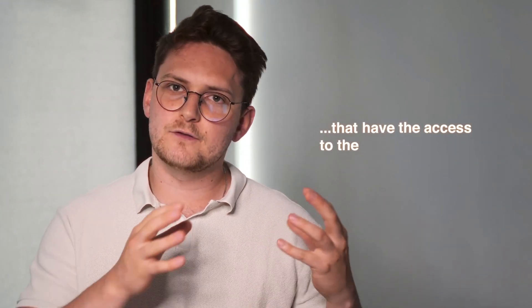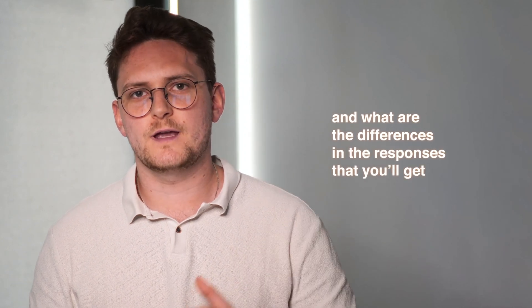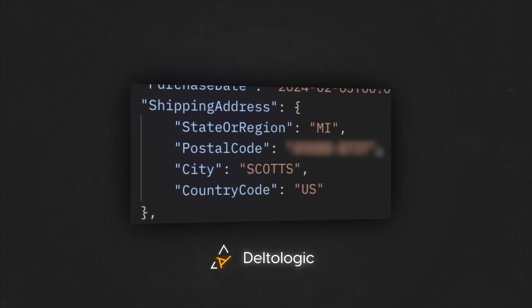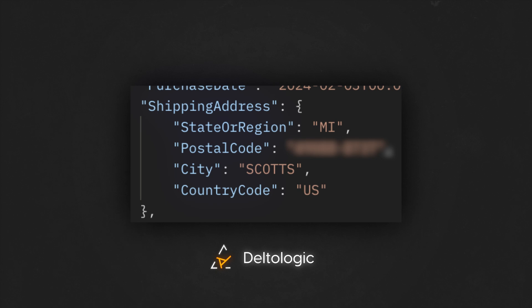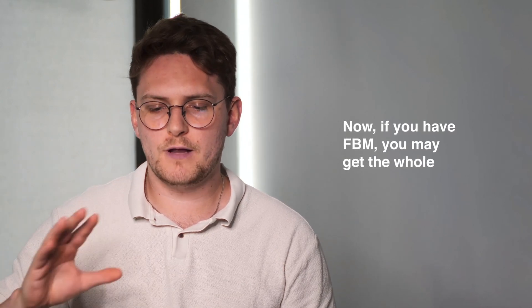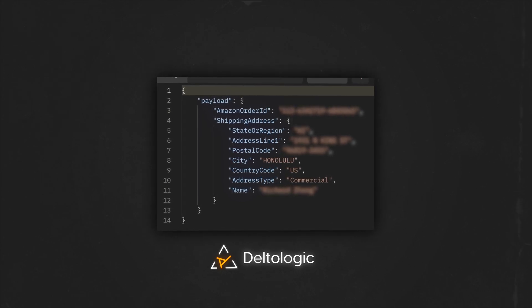Now I want to show you the differences in requests with and without PII access, and what differences you'll see in the responses from the Selling Partner API. For an account without PII, as you can see here, you simply get state or region, postal code, city, and country code - that's it. But if you have fulfillment by merchant with PII access, you get the full shipping address: state or region, address line one, postal code, city, country code, address type, and the name - so you can directly send the shipping.